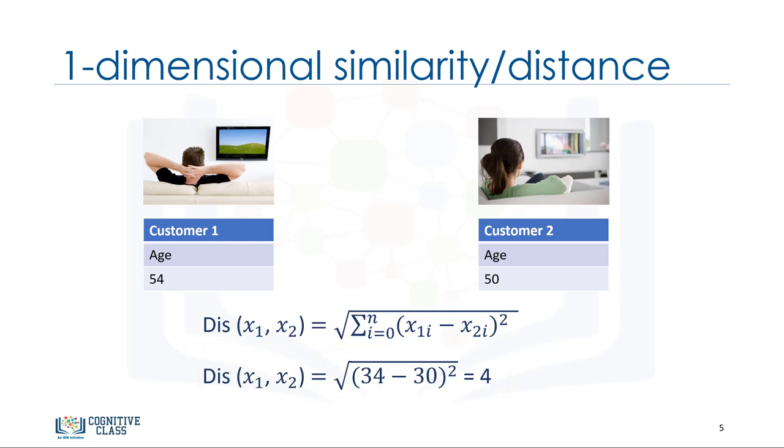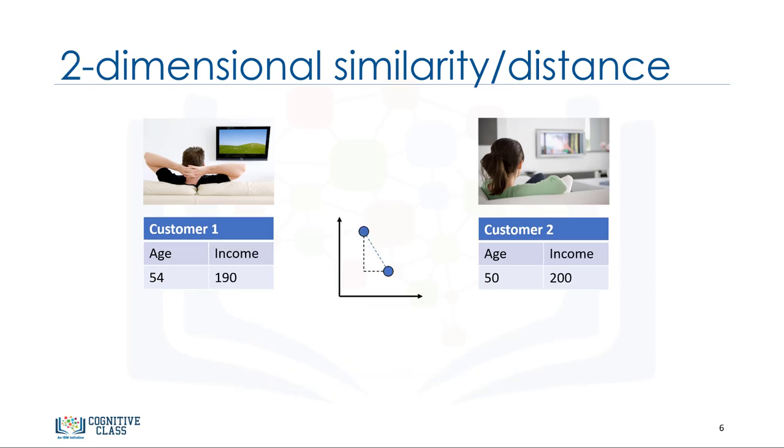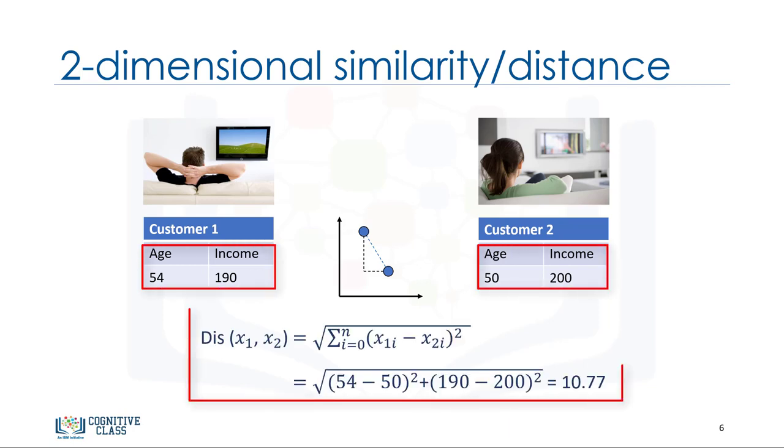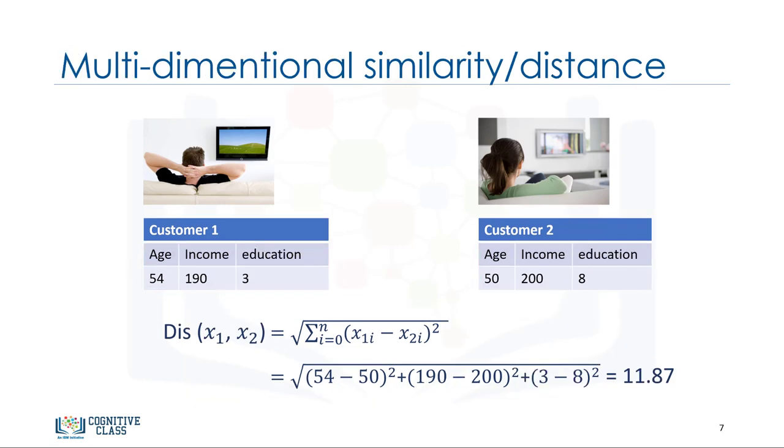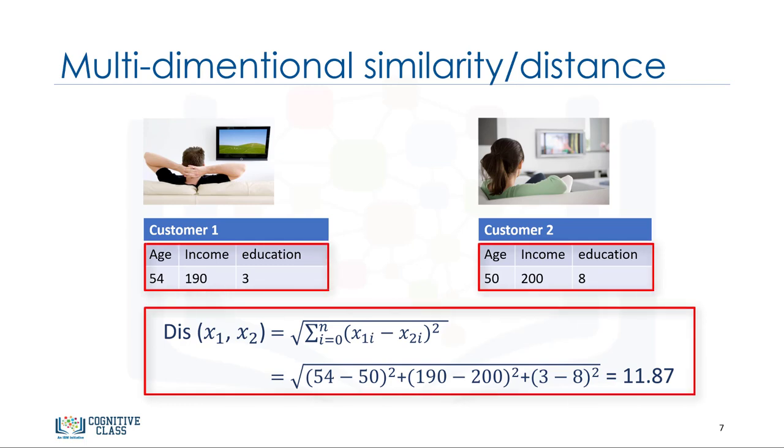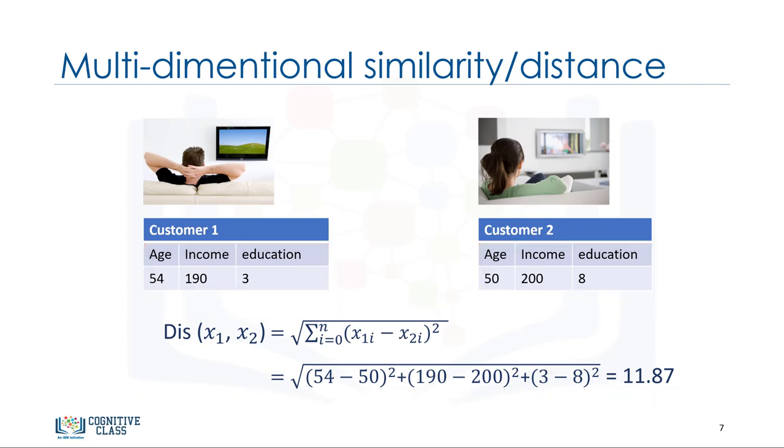What about if we have more than one feature? For example, age and income. If we have income and age for each customer, we can still use the same formula, but this time in a two-dimensional space. Also, we can use the same distance matrix for multi-dimensional vectors. Of course, we have to normalize our feature set to get the accurate dissimilarity measure. There are other dissimilarity measures as well that can be used for this purpose, but it is highly dependent on data type and also the domain that clustering is done for it.